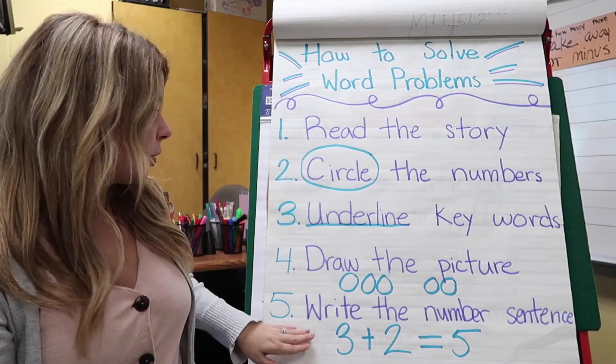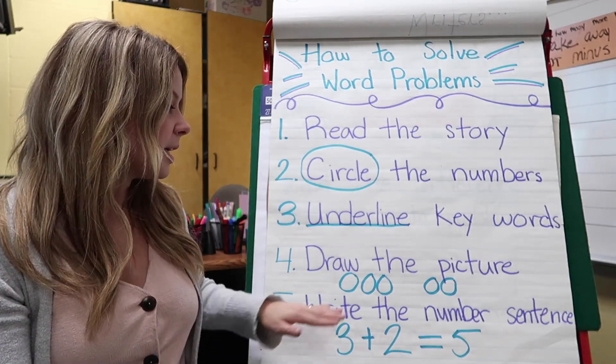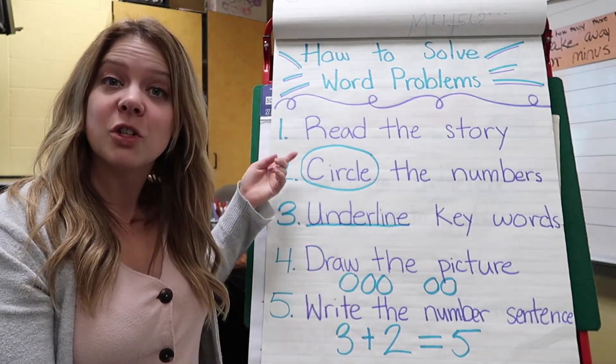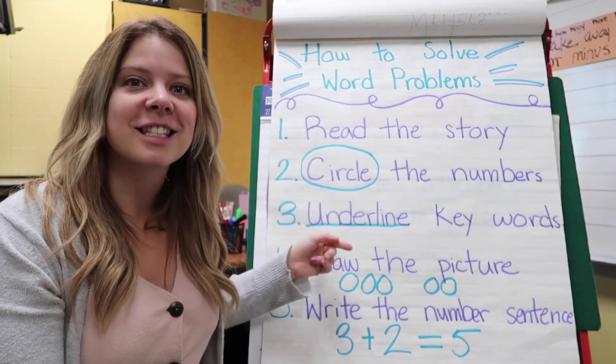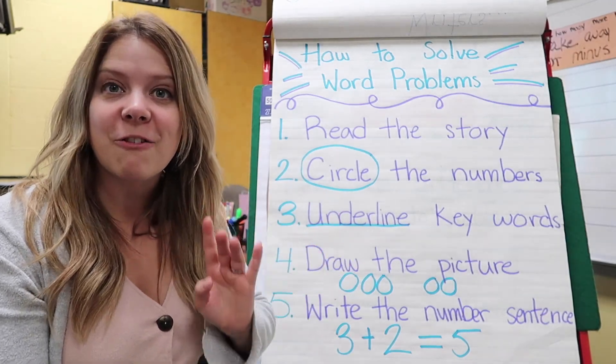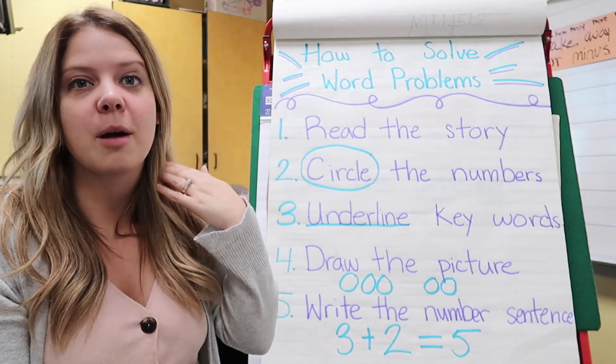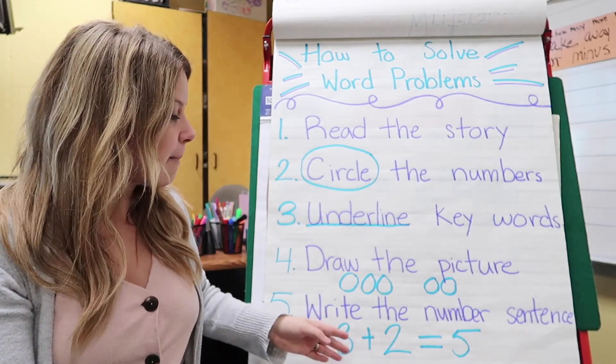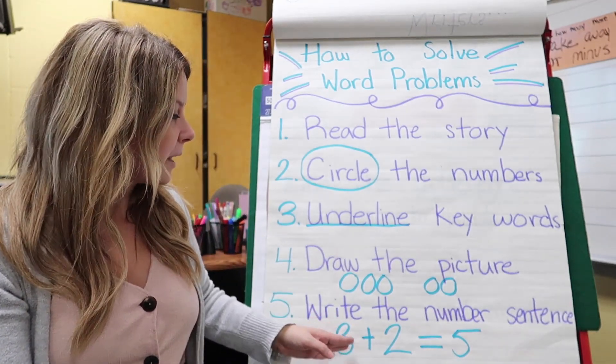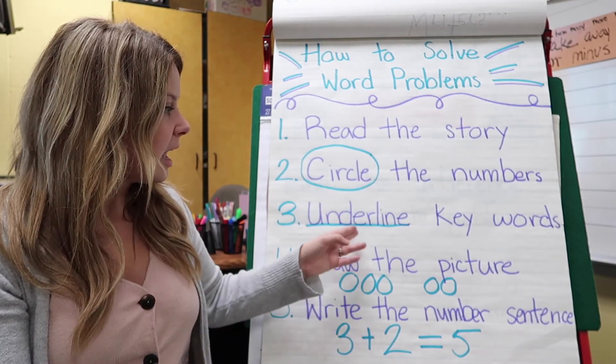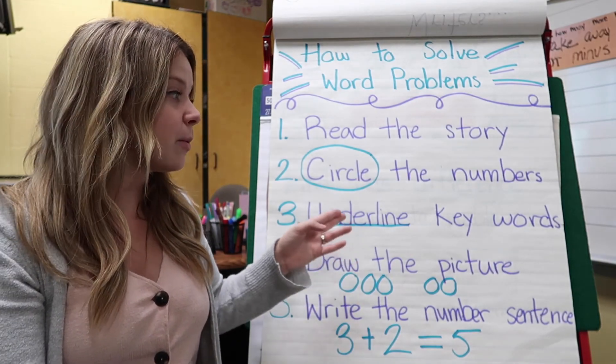And then your last step is for you to write the number sentence. Remember, it's not enough to circle it, underline it, or draw a picture. Our final step, so that we can see your thought process, is to write the number sentence. So, it's the numbers that you circled, and then the underlined keyword will tell you,